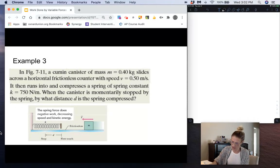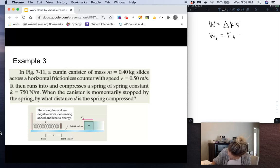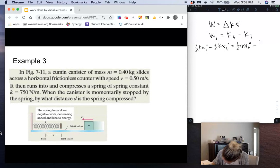From the work kinetic energy theorem, we get work is equal to change in kinetic energy. This is the work done by the spring force, and that's going to be kinetic energy final minus kinetic energy initial of that cumin canister. Now we know that the work done by the spring force is equal to one-half kx initial squared minus one-half kx final squared. And then kinetic energy is one-half mv final squared minus one-half mv initial squared.